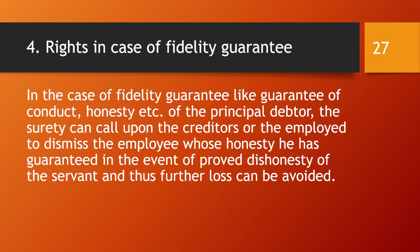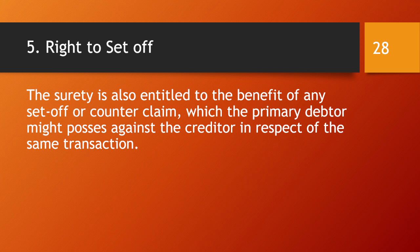In the case of a fidelity guarantee — a guarantee of conduct, honesty, etc. of the principal debtor — the surety can call upon the creditor or employer to dismiss the employee whose honesty he has guaranteed, in the event of proved dishonesty, thus avoiding further loss. Additionally, the surety is entitled to the right to set off — the benefit of any set-off or counter-claim which the principal debtor might possess against the creditor in respect of the same transaction.